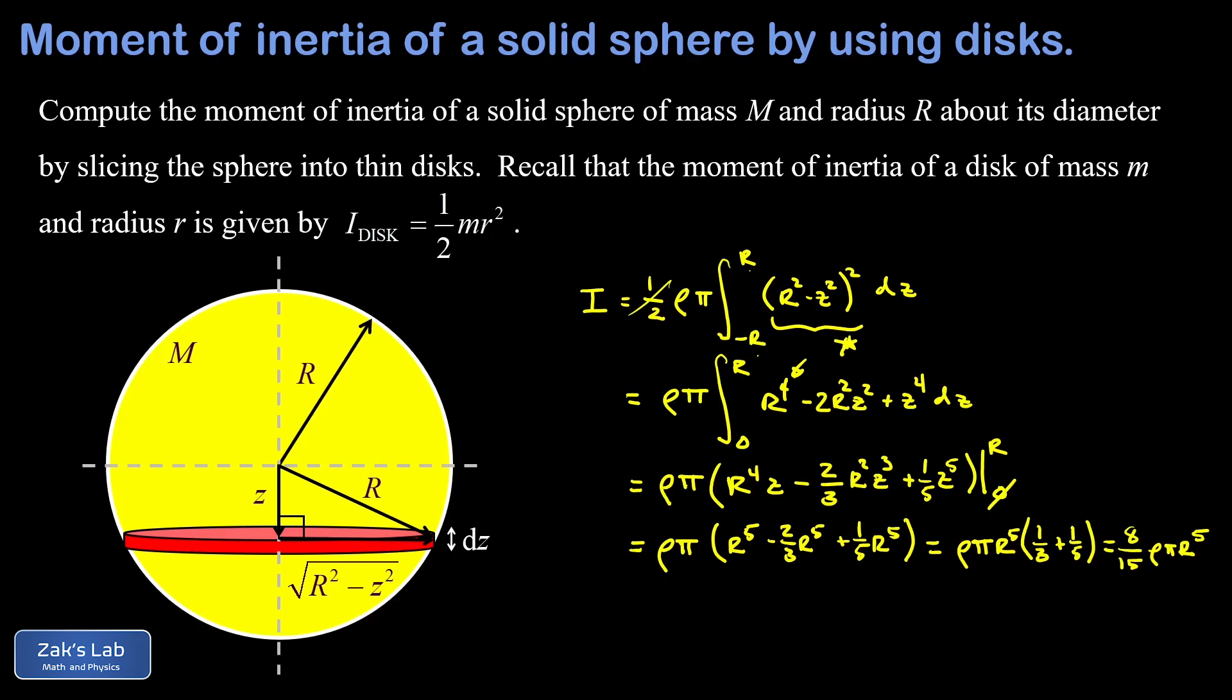Now we're not done yet because the density of this thing that we called rho can be expressed in terms of the mass of the ball and the radius of the ball. And that density is just mass divided by volume. Well the volume of this ball is four thirds pi r cubed. So we're going to replace rho with m over four thirds pi r cubed. We could also write that as 3m over 4 pi r cubed and then clean things up.